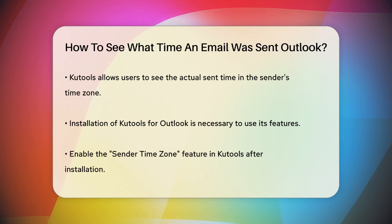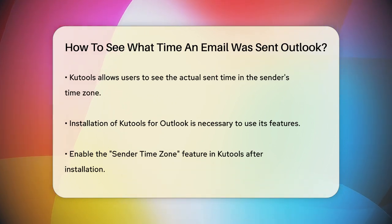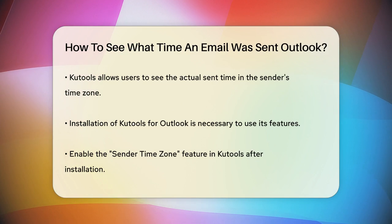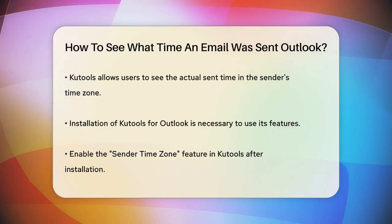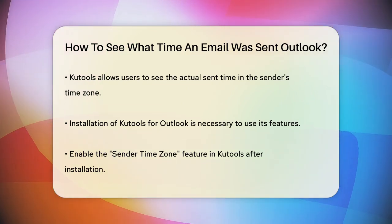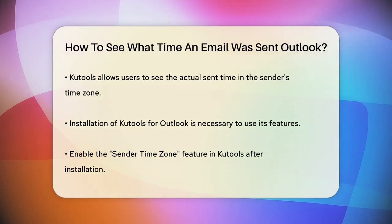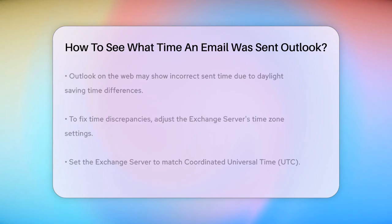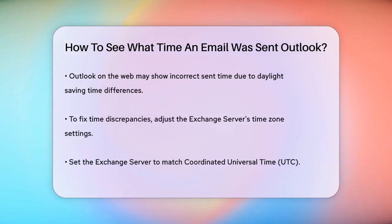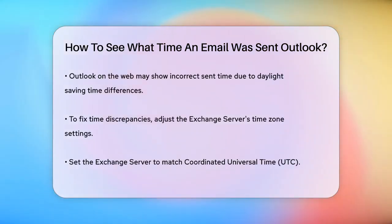Here's how you can do it. First, you need to install Kutools for Outlook. Once installed, you can enable the sender time zone feature. This will give you the option to view the email's sent time in the sender's time zone, helping you understand the timing better.